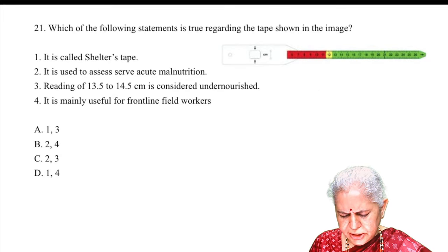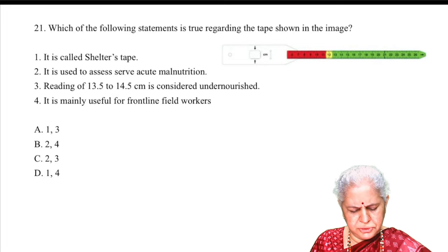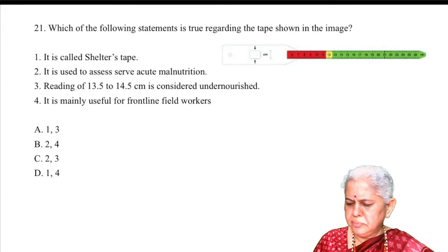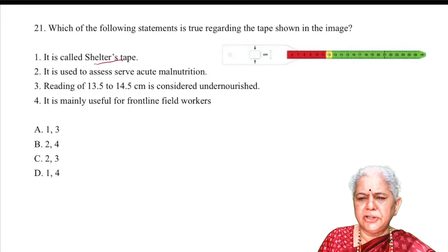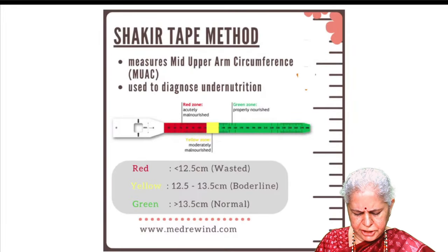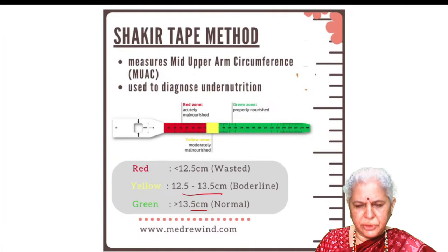Question about a tape shown in the image: which statement is true? Answer B is correct. It is not Shelter's tape — it is a Shakir tape, used to assess severe malnutrition, mainly useful for frontline health workers. The reading 13.5–14.5 as undernourished is wrong. Correct Shakir tape readings: more than 13.5 cm is normal; 12.5–13.5 cm is borderline (yellow); less than 12.5 cm is wasted (red).